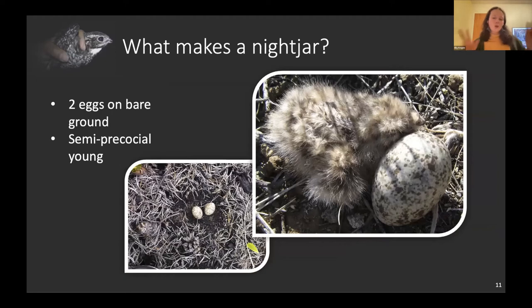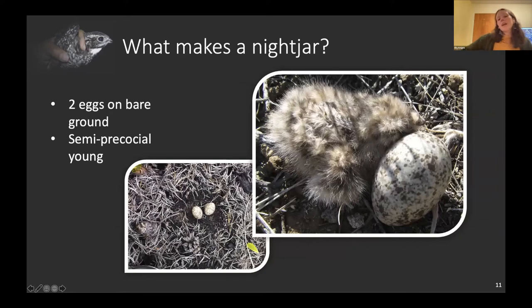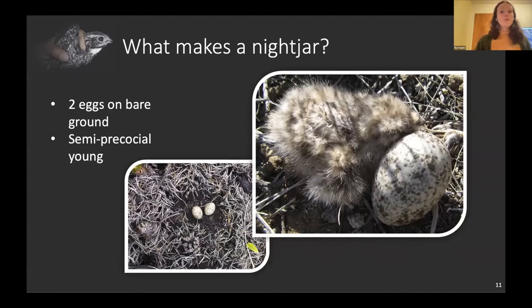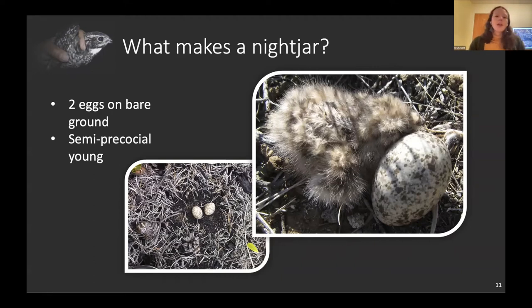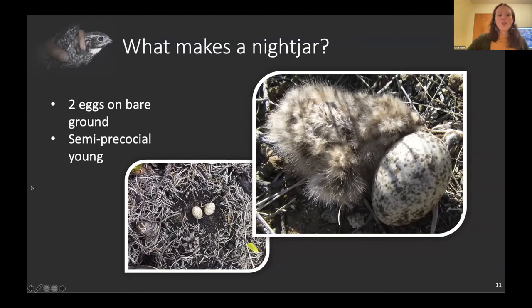Many nightjars have white patches for mating display — here are male nighthawks with white patches on the wings, tail, and throat. Most species lay two eggs on bare ground; they don't make actual nests, just a scrape, sometimes just pushing a couple of pine needles aside. They have semi-precocial young that can walk within a few hours of hatching and start moving quickly, which is a strategy to prevent predation while nesting on the ground.